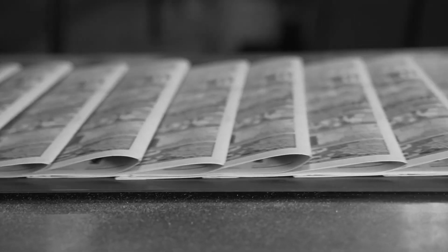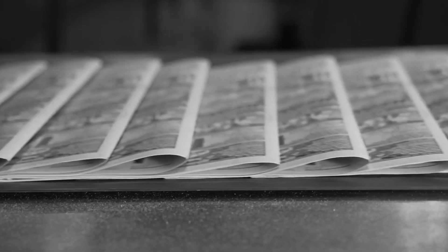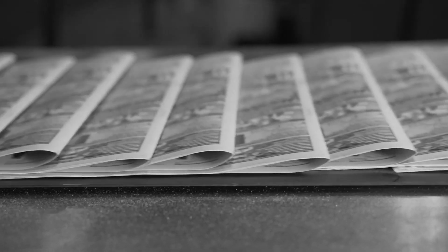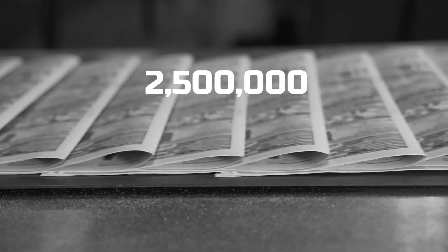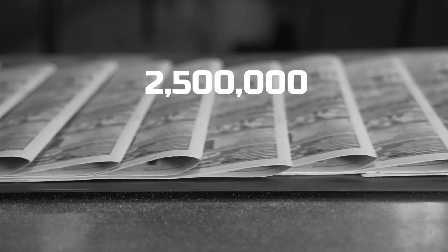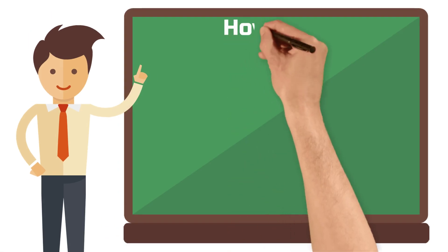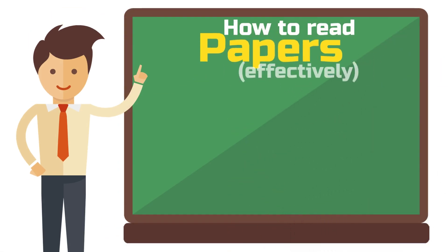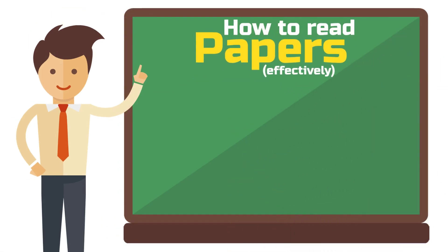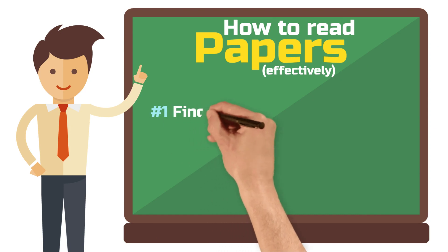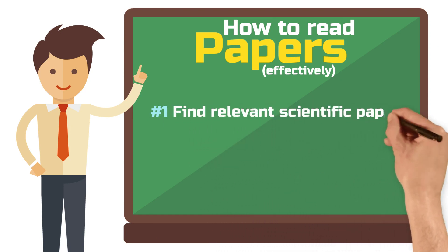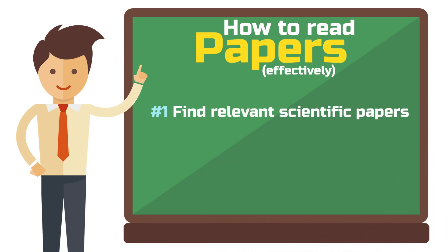Every year, more than 2.5 million scientific papers are published worldwide. There's no time to read them all. That's why it's so important to approach the task with a plan. You need to know exactly how to find the right scientific papers that are relevant to you and your work.